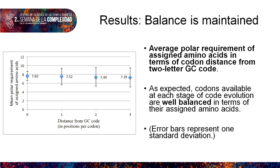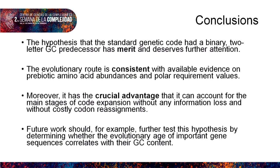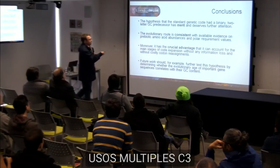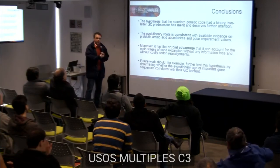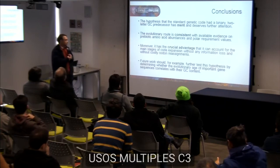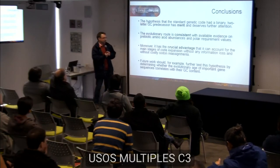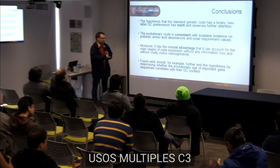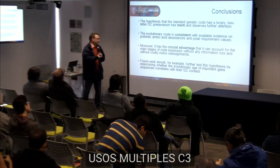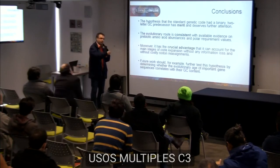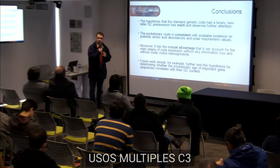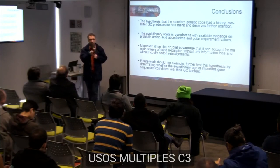In conclusion, we think this hypothesis has merit and deserves further attention. As far as we know, nobody else has proposed this — if you know of any related work, please send it to us. It is consistent with available evidence on prebiotic amino acid abundances and polar requirement values. The crucial advantage is that it accounts for the main stages of code expansion without information loss and without costly codon reassignments. Future work should test this hypothesis by determining other implications — for example, whether the evolutionary age of important gene sequences correlates with their GC content. The oldest genes should have the highest GC content, dating back to the primordial GC code.